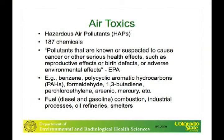Starting with the air toxics — this is a group of about 187 chemicals that, according to the EPA, are known or suspected to cause cancer or other serious health effects. It's a pretty broad definition and includes a wide variety and classes of chemicals. Some examples include benzene, polycyclic aromatic hydrocarbons or PAHs, which I'll talk about a bit later, formaldehydes and other aldehydes, 1,3-butadiene which is in diesel particles, perchloroethylene which is common in dry cleaner chemicals, and heavy metals such as arsenic and mercury.